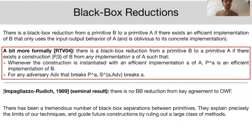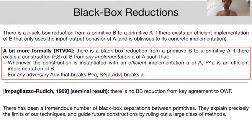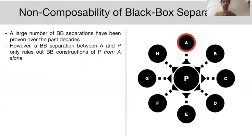Given this formal definition, we can prove it is not possible to find a black box reduction between certain cryptographic primitives. This is what Impagliazzo and Rudich did in their seminal 1989 paper by proving there exists no black box reduction from key agreement to one-way functions — asking whether we can base all of modern cryptography on the most primitive assumption. Since then there have been dozens, perhaps hundreds, of such black box separations.